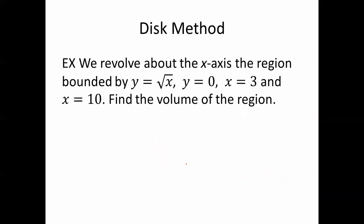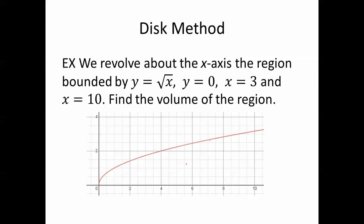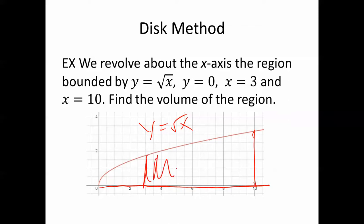For example, we revolve about the x-axis the region bounded by y equals square root of x, y equals 0, x equals 3, and x equals 10. Find the volume of the region. Here's what our region looks like. This is y equals square root x; y equals 0 is the x-axis. This is x equals 3 and x equals 10. So we are revolving about the x-axis this region.